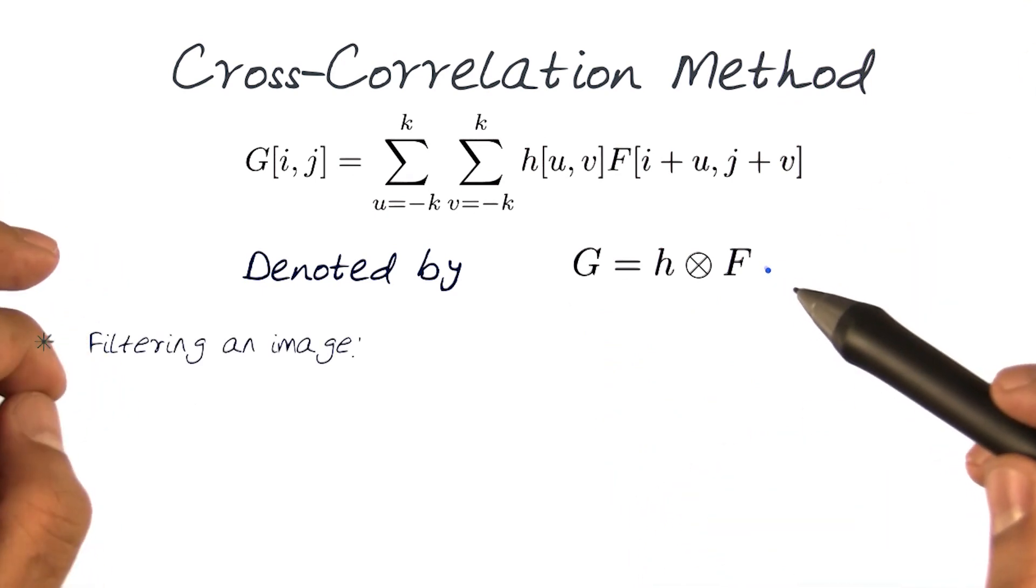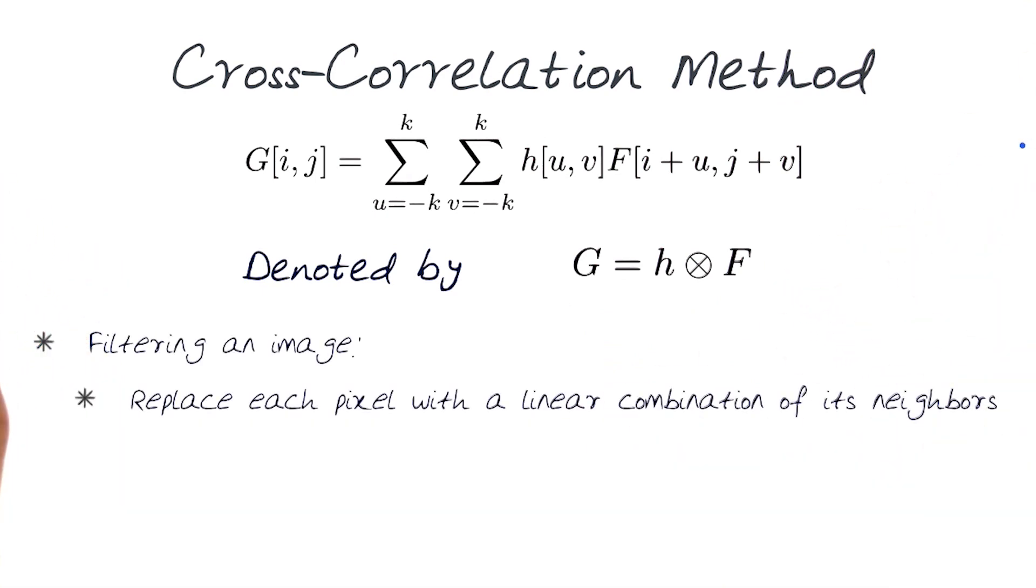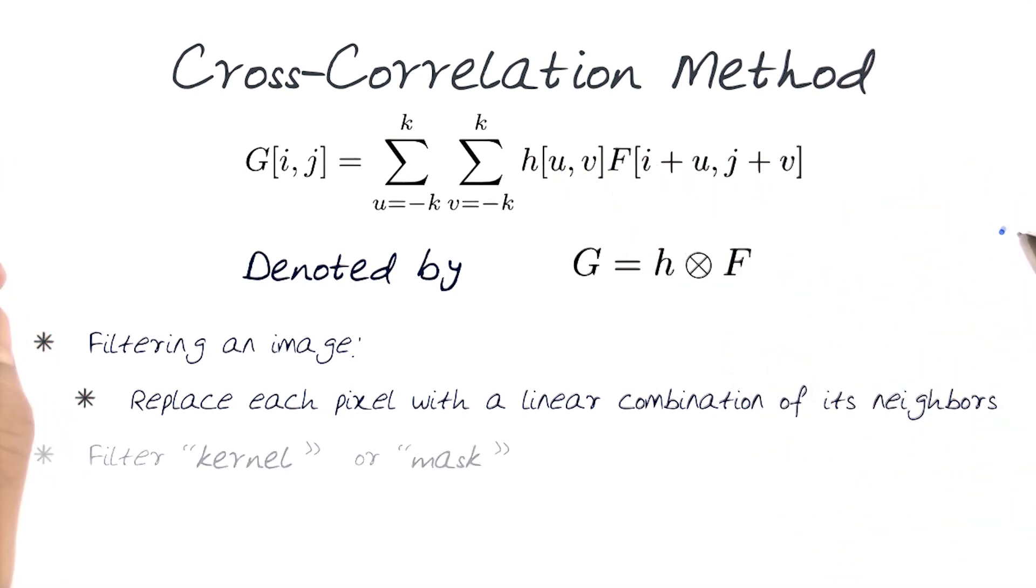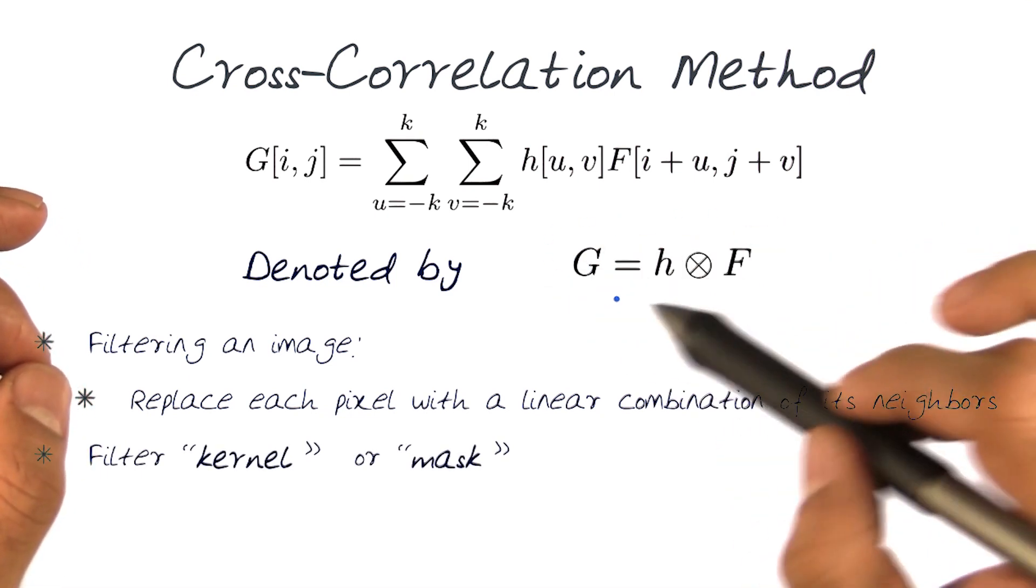So what do we mean when we say we are filtering an image? What we mean is we are replacing each pixel in the output with a linear combination of its neighbors with a kernel matrix. And for each one of them, there is a kernel or a mask signal H.